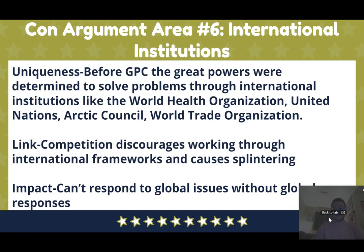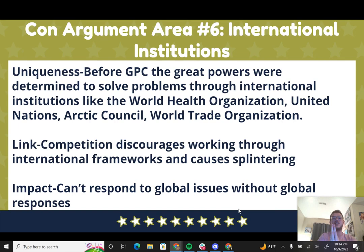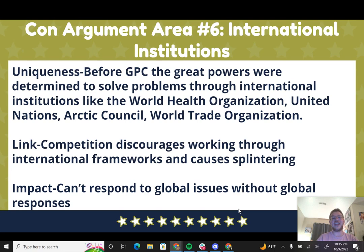The sixth con argument area is international institutions. Before this strategy, we were focused on globalization and created organizations like the World Health Organization, the United Nations, and the World Trade Organization. But competition hurts the overall relationship between the U.S., Russia, and China, meaning we won't work through these international organizations, and it causes splintering of alliances. This makes organizations less effective, so we can't respond to global issues these institutions were set up to address.